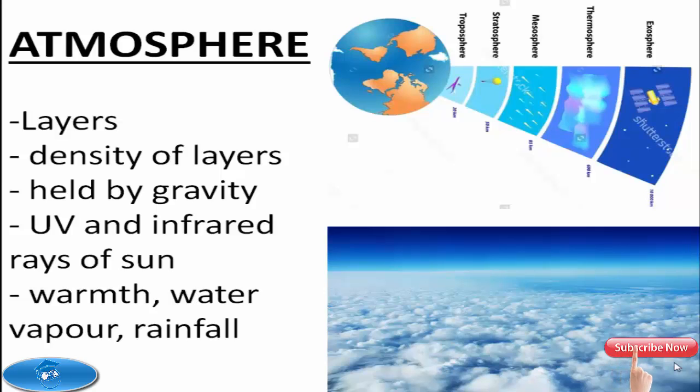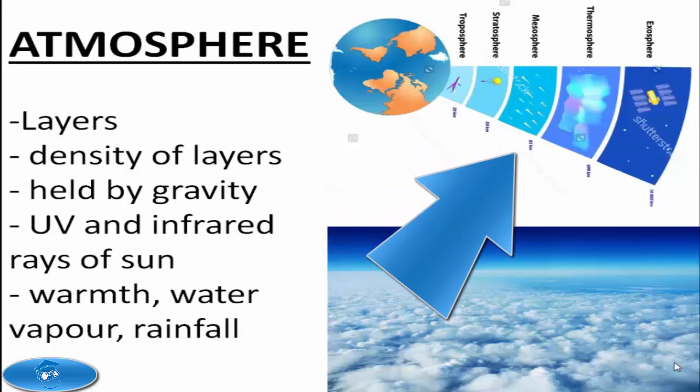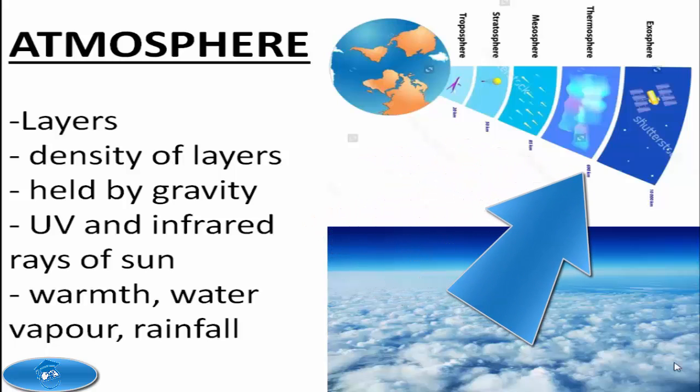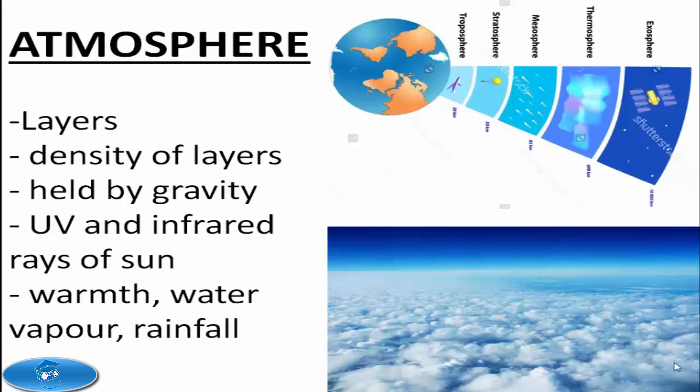The blanket of air surrounding the Earth is known as the atmosphere. It exists in several layers around the Earth. These layers become thinner at higher altitudes, therefore one finds it difficult to breathe as one goes up. This is because less air is pressing down from above. Half of the total mass of air is found below five kilometers touching the surface of the Earth.